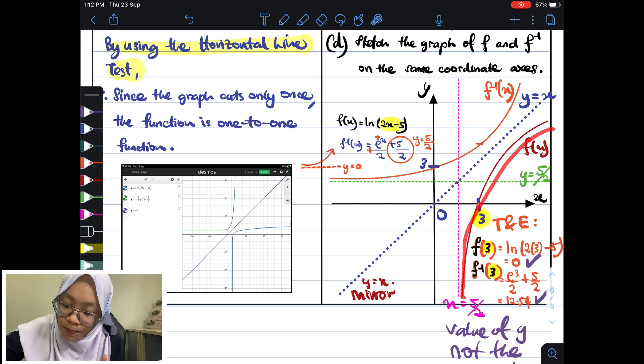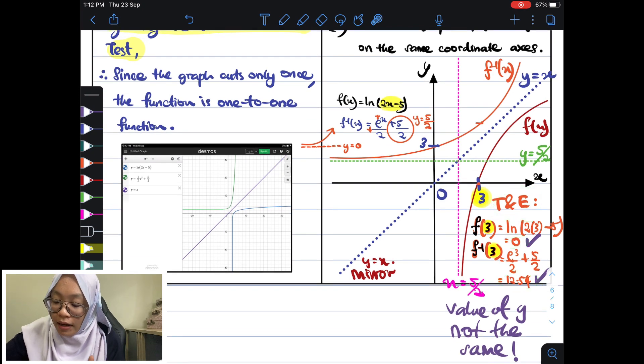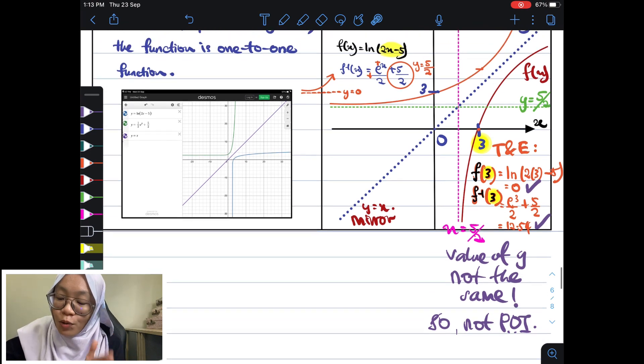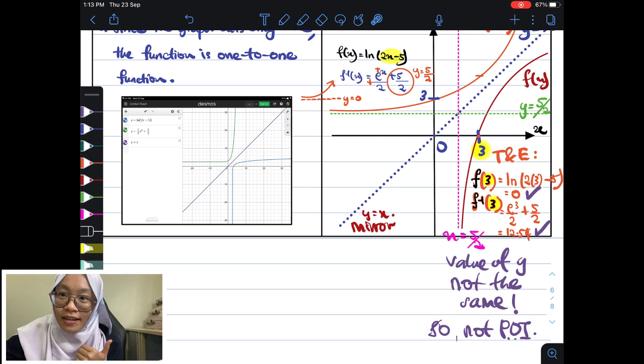Sebab tu saya rasa better buat yang tak cross dulu. Better buat yang split dulu. Splitkan dia. Jangan crosskan awal-awal. Better you split them first. Make sure they not cross with each other. Later on, baru you try and error whether you got the same value of y. If you don't get the same value of y, maksudnya you are correct lah. Kalau you get the same value of y, maksudnya they cross with each other. Just use point 3. Sebab point of intersection, you kena faham apa itu point of intersection.